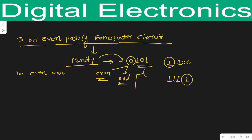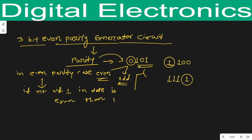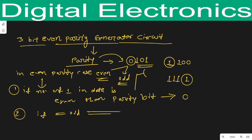In the even parity case: if the number of ones in the data is even, then the parity bit will be zero. That is our first case. In the second case, if the number of ones is odd, then in the case of even parity the parity bit will be one.